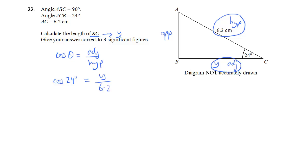Now in this equation, Y is already in the numerator. I just need to get rid of the 6.2. So the inverse of division is multiplying. So I'm going to multiply both sides by 6.2, giving me 6.2 cos 24 degrees is equal to Y.